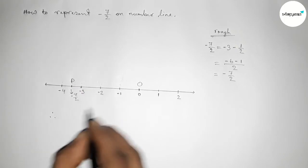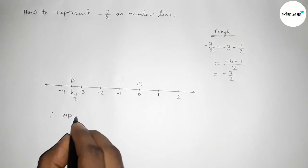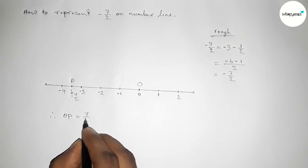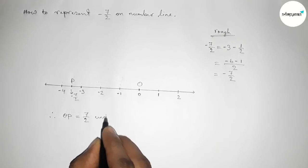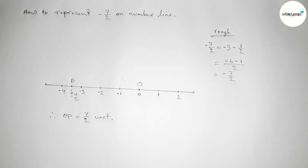So therefore OP equals to, we can write 7 by 2 units. Since we know that the length is always positive.